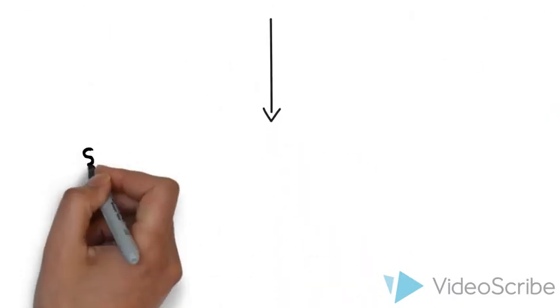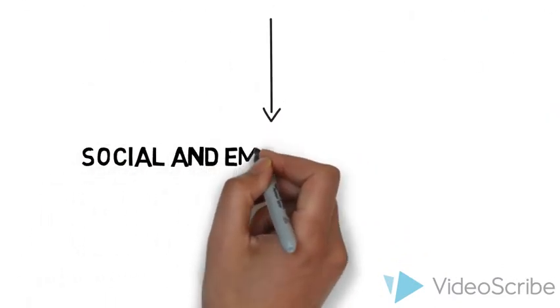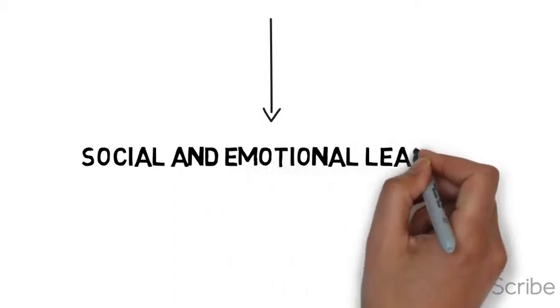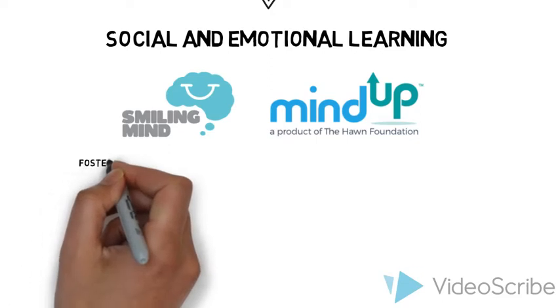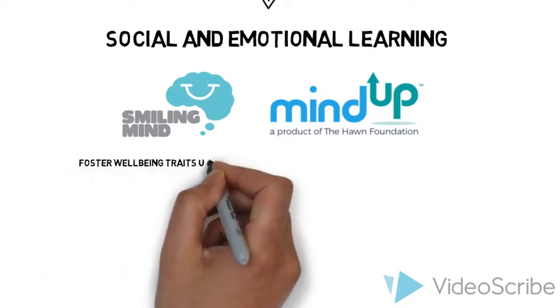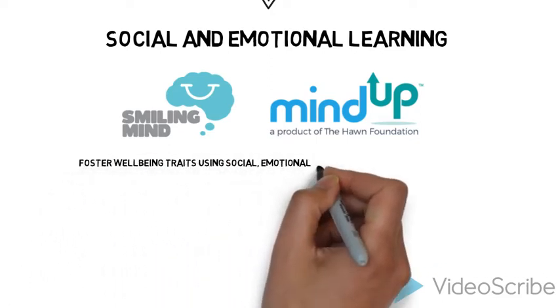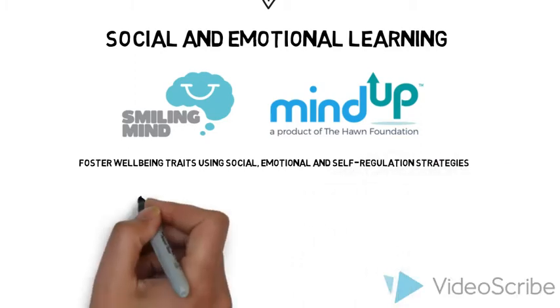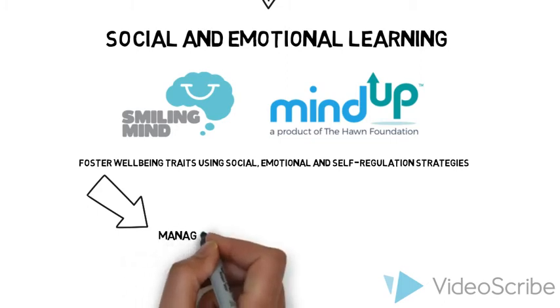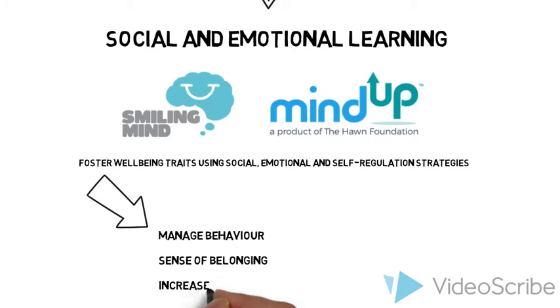One strategy that may be implemented in the school is social and emotional learning programs which are believed to enhance student resilience. Examples of programs include Smiling Minds and Mind Up that foster the development of well-being traits using social, emotional and self-regulation strategies that help students build on their non-cognitive skills. More specifically, these programs could assist Dylan to better manage his behaviour, allowing him to feel a sense of belonging in his school network and hopefully increase his engagement in academic and sport achievement.